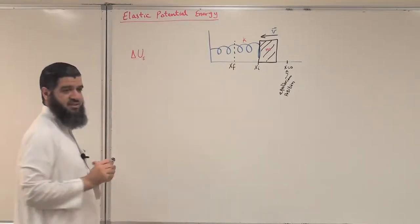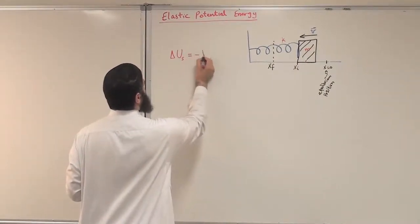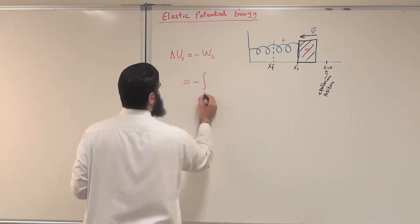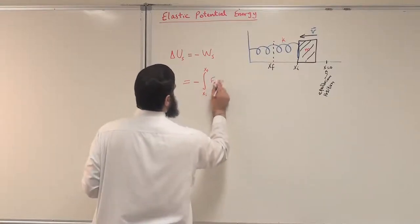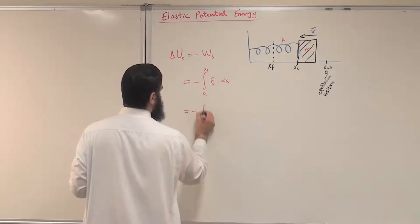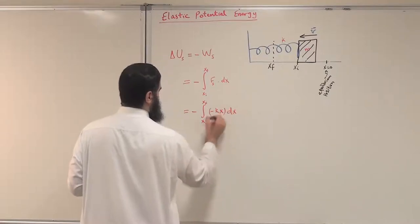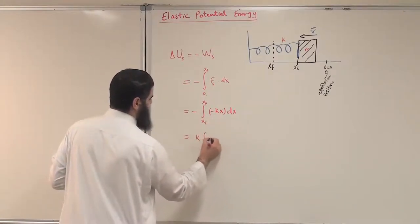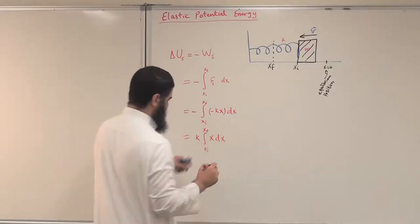I'll start with the general formula: ΔU_s, because the spring force is a conservative force, equals minus the work done by the spring. So ΔU_s equals minus the integral from X initial to X final of the spring force F_s dot dX. The spring force is minus K times X, so this becomes minus the integral of minus K X dX. The minus signs cancel, leaving plus K times the integral of X dX from X initial to X final.